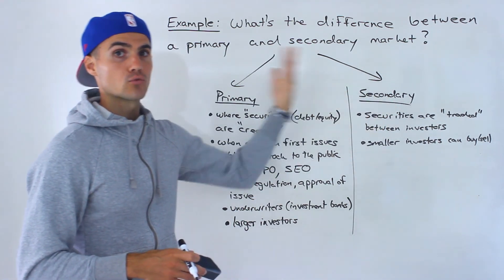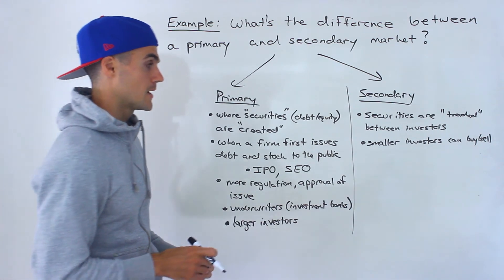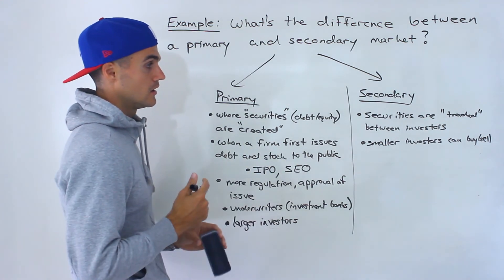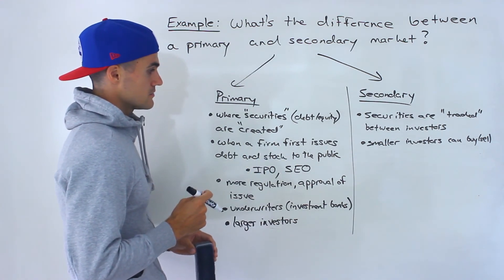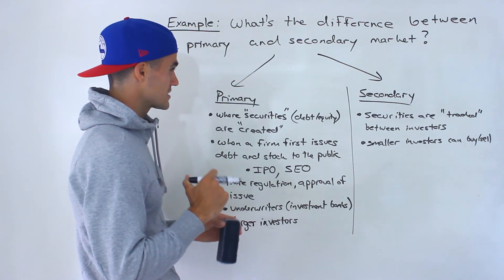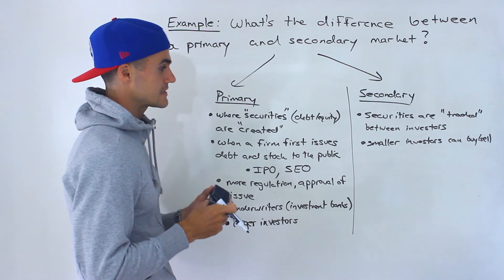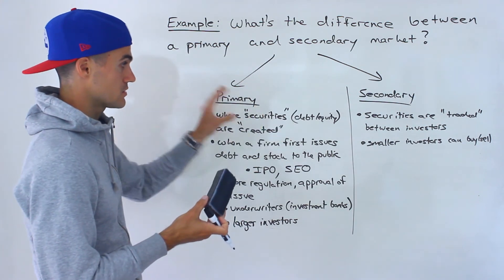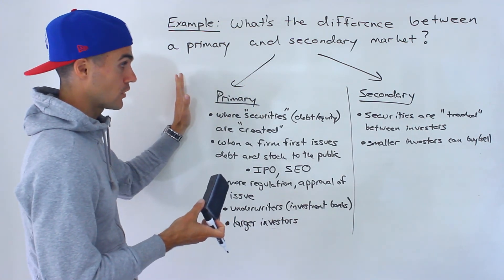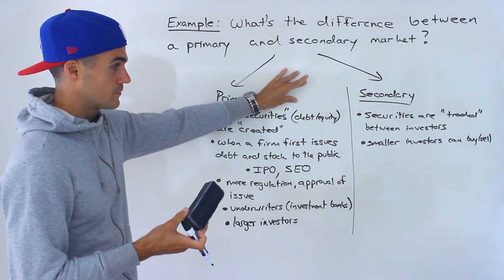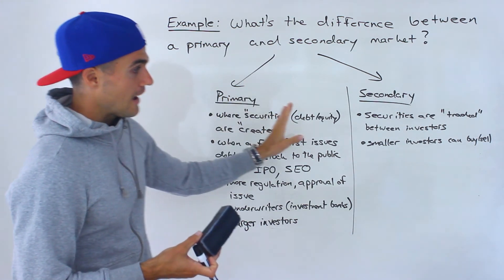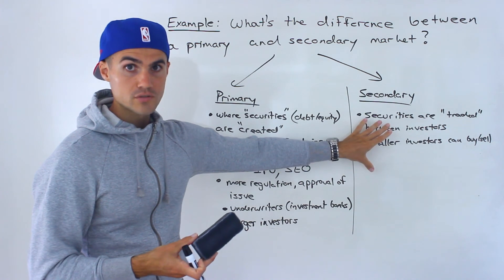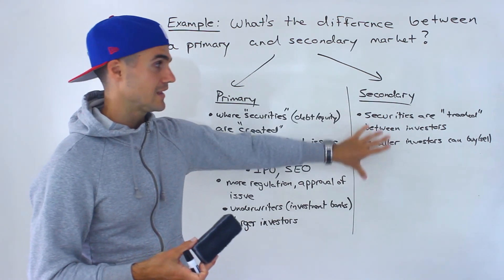In the secondary market, they can repurchase shares. Smaller investors and larger investors can buy and sell amongst each other. To simplify this with a more simple example, you can think about it like Apple selling an iPhone. Initially, when Apple creates a new iPhone, they're selling it to customers — you could think of that as a primary market, Apple being the firm, customers being the investors. And then as time goes on, used phones can be sold amongst customers in a secondary market.